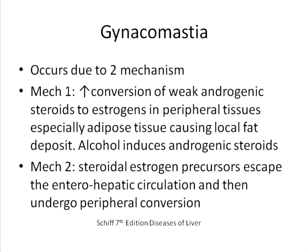The second mechanism described is an escape of steroid and estrogen precursors through the enterohepatic circulation and through the abnormal portosystemic shunting that occurs, which ultimately allows them to reach the peripheries where they get converted as per mechanism one. Whatever the mechanism, it is consistently a finding seen in alcohol-related liver disease.